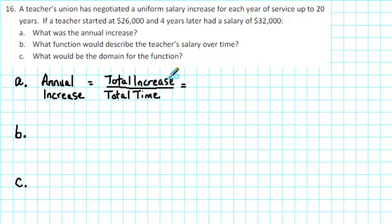To find the total increase, we'll take the ending salary, $32,000, subtract the beginning salary, $26,000, and we'll divide that by the total number of years that it took for the increase to take place, and that was four years.